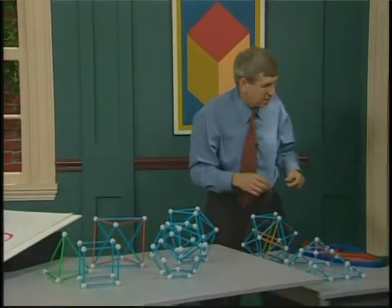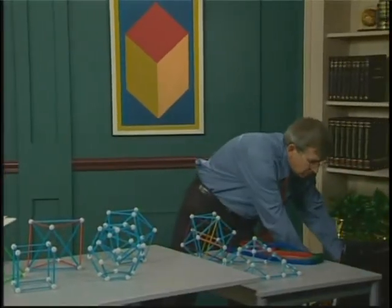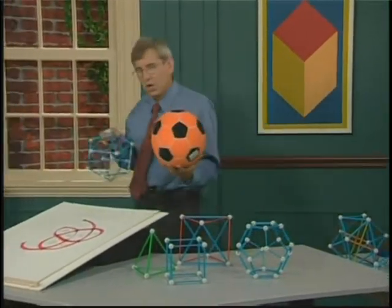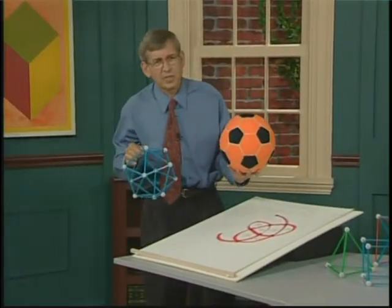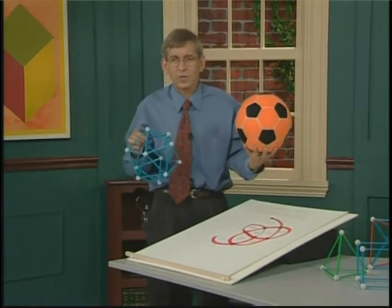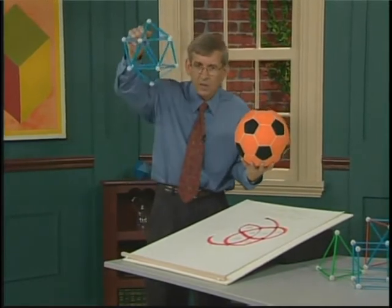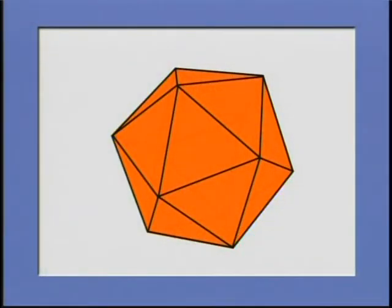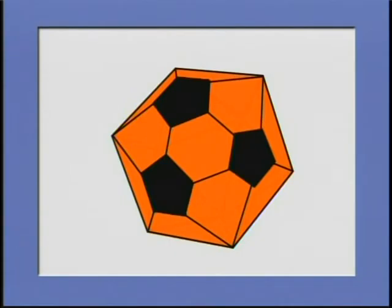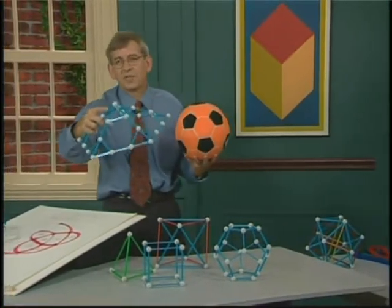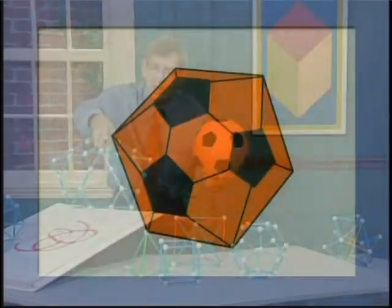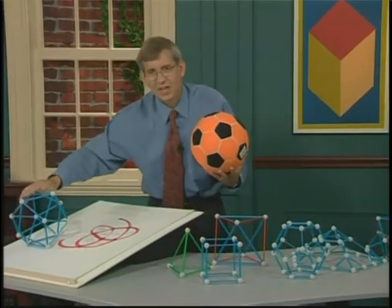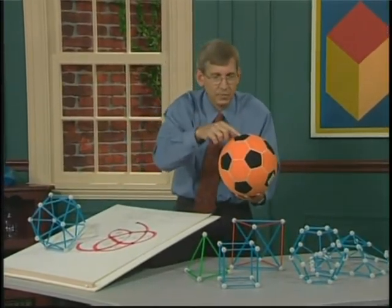I want to end with an important idea — explaining a soccer ball. You may ask, what's so interesting about a soccer ball, and what does it have to do with the regular solids? A soccer ball is really an icosahedron, a 20-sided figure where every vertex has been cut off. If you cut off the tip of each vertex, you end up with hexagonal pieces — every triangle of the icosahedron becomes a hexagon.